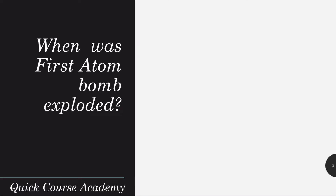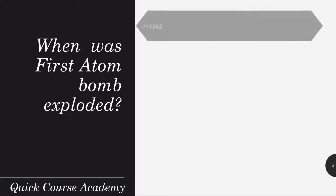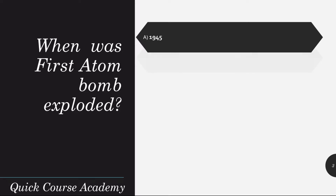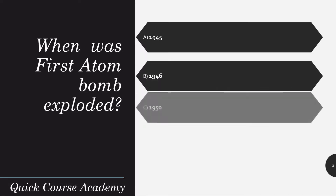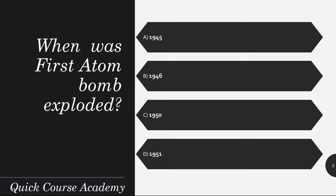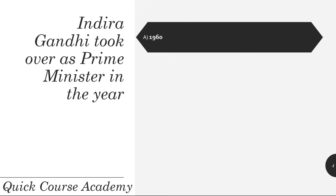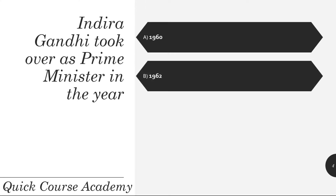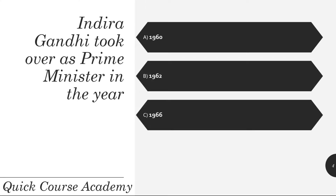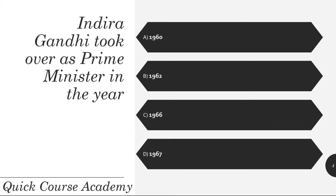When was the first atom bomb exploded? 1945, 1946, 1950, or 1951? And the correct answer is 1945. Indira Gandhi took over as Prime Minister of India in the year 1960, 1962, 1966, or 1967? And the correct answer is 1966.